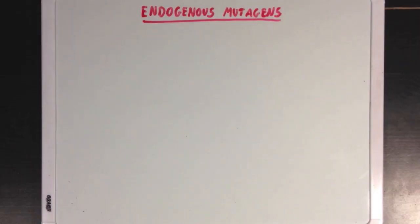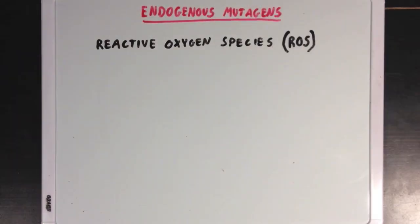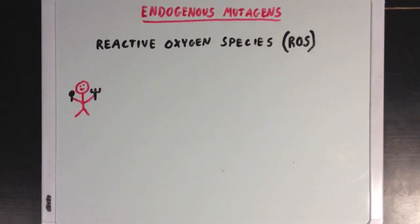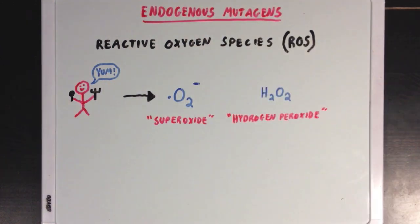What are some examples of endogenous mutagens? The most significant endogenous mutagens are what we call reactive oxygen species, or ROS. ROS are naturally occurring metabolites in the human body that are produced by mitochondria during oxidative phosphorylation. During the metabolism of a meal, mitochondria will produce ROS like O2·⁻, which we call superoxide — an oxygen molecule with one extra electron — as well as hydrogen peroxide, another ROS that your body can produce.